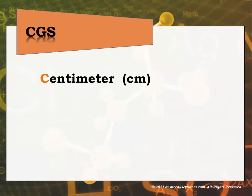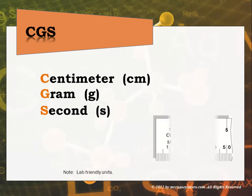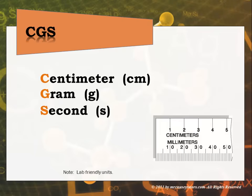So we have the CGS system, which is just a little bit smaller and a little bit more useful in the laboratory, but it is still part of the metric system. In the CGS system we have the centimeter, the gram, and the second. These are just a bit more lab-friendly, so that is what we will be using in the lab a lot.